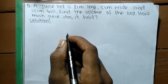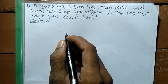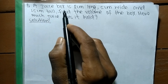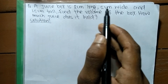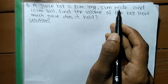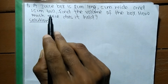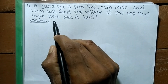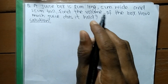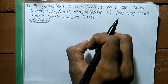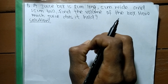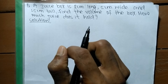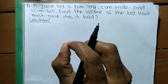Today in this video we are going to solve a question related to math. The question is: a juice box is 8 centimeters long, 5 centimeters wide, and 15 centimeters tall. Find the volume of the box — how much juice does it hold? Here is the juice box, and we have been given its length, width, and height. We have to find out its total volume.